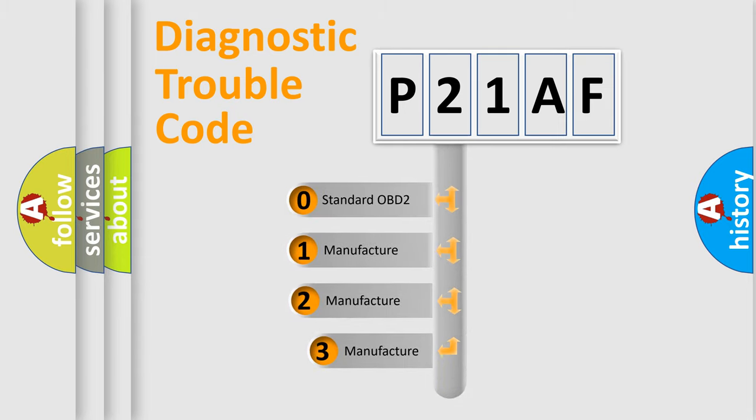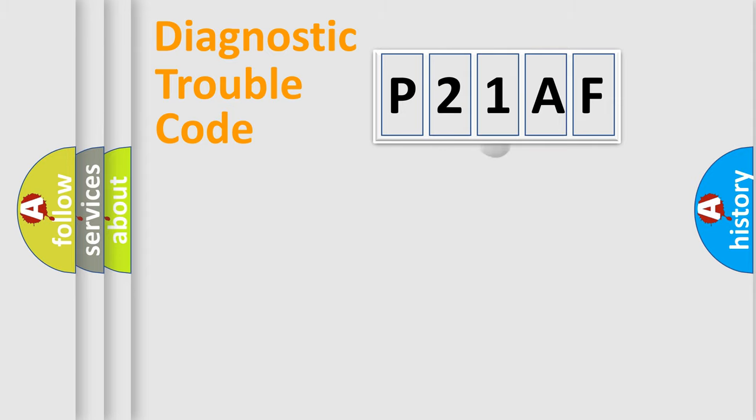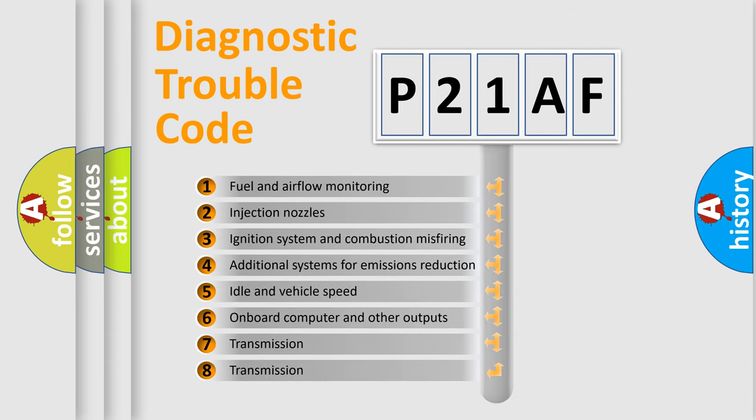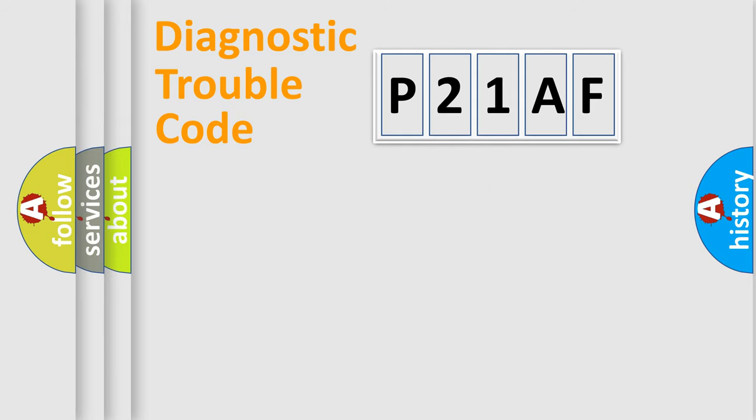If the second character is expressed as zero, it is a standardized error. In the case of numbers 1, 2, or 3, it is a more precise expression of the car-specific error. The third character specifies a subset of errors. The distribution shown is valid only for the standardized DTC code.